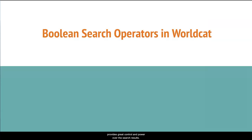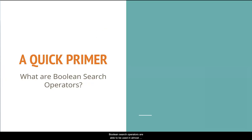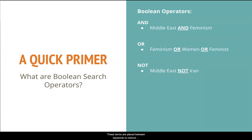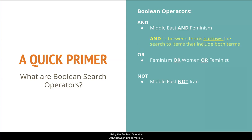Learning to use Boolean operators in WorldCat provides a great level of control and power over the search results. Boolean search operators are able to be used in almost every database available through McCain Library. The three Boolean operators are AND, OR, and NOT. These terms are placed between keywords to instruct the database on how to handle those keywords. Using the Boolean operator AND between two or more terms will require that each of those terms be found in each item in the results. This is great for combining different concepts that you know you want to include, and it also narrows the results since each keyword must be found in the item record.